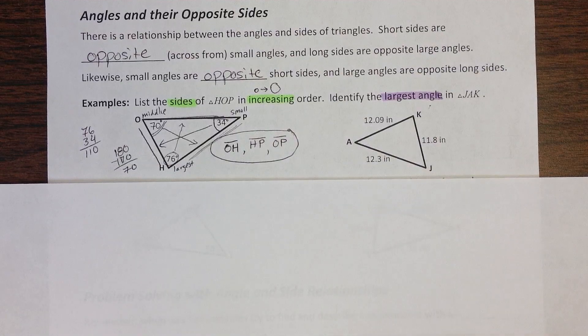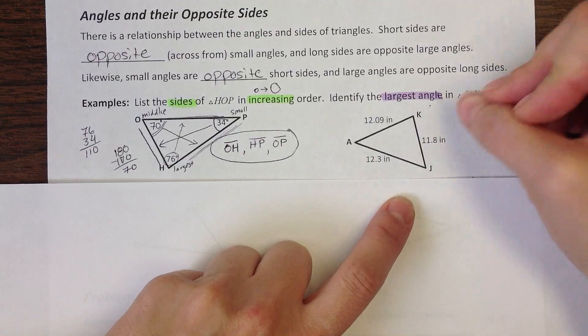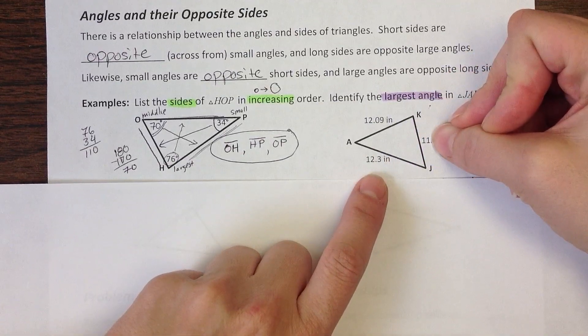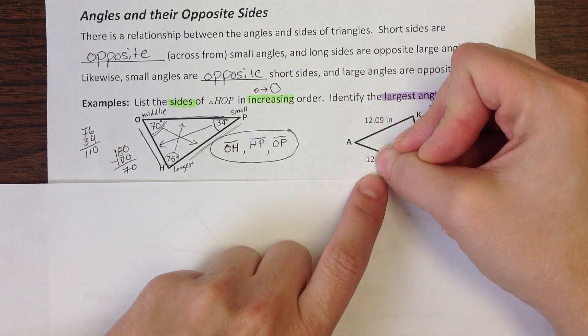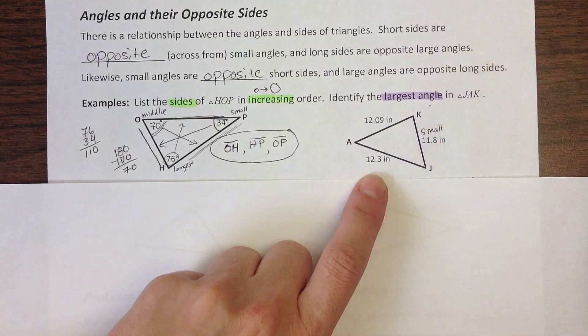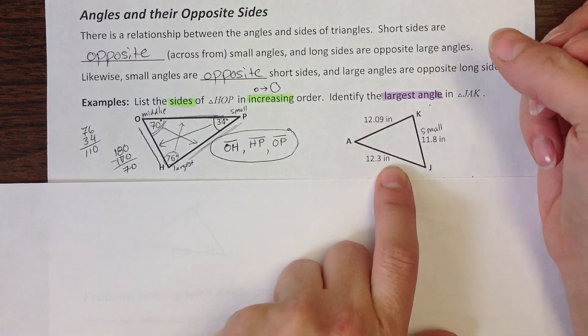So I'm looking at my sides. I've got decimals. So if you struggle with decimals, let's kind of review that very quickly. If I just put my hand over the tenths place, I just look at the whole numbers. That one's around 11, that one's around 12, that one's around 12. So I already know that this one's going to be smaller. And again, I'm looking for the largest one, so I want my longest side right now.